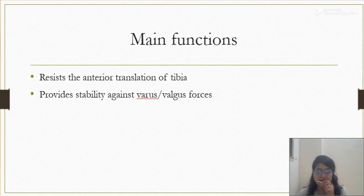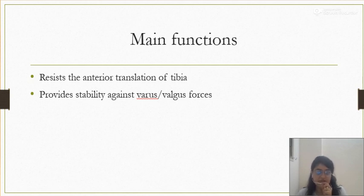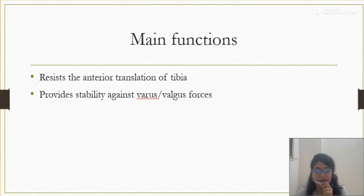We perform the anterior drawer test to detect whether the ACL is at fault. We apply a posterior-to-anterior pull over the tibia, and if displacement is more than 6 mm, we conclude it could be due to ACL injury. We compare it to the other side, since some people have greater tibial translation due to hypermobility. If the valgus or varus forces are excessive, the common resulting condition is the unhappy triad, where the medial meniscus, ACL, and medial collateral ligament are all injured.